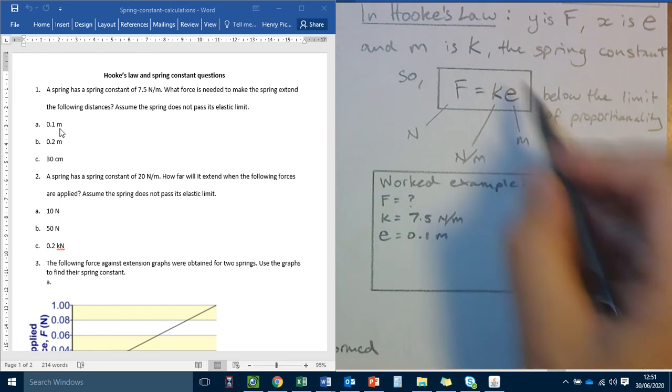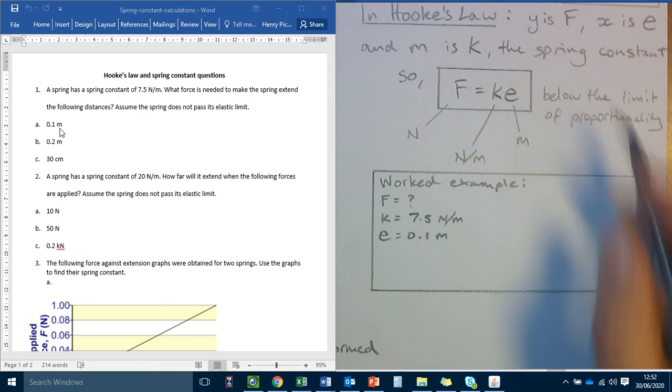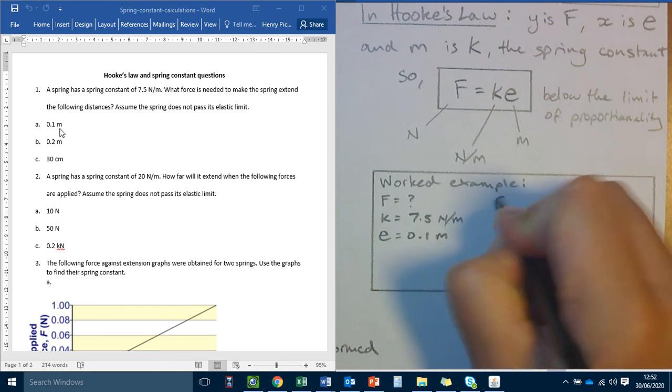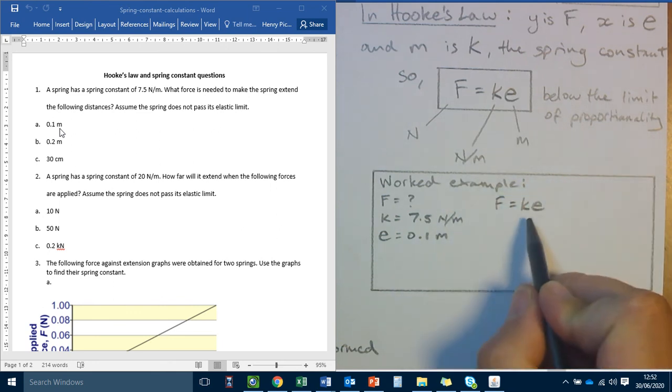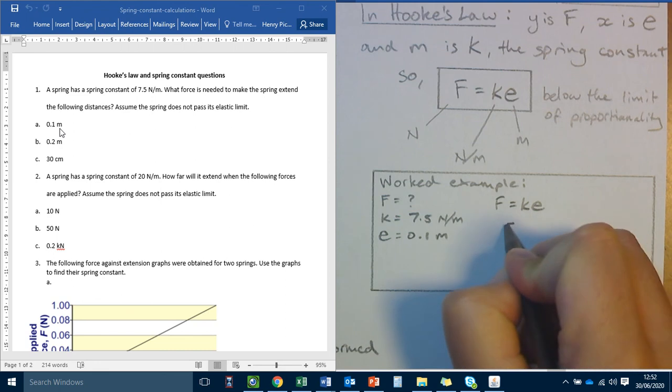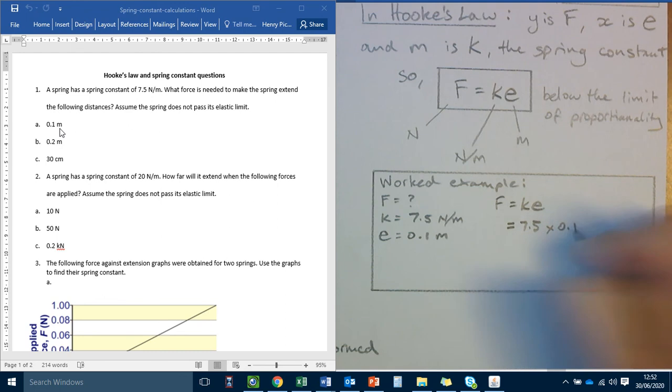I don't know F. So I'm going to write down the equation that I need to find F. And it's already in this natural form. So I'm going to write F equals KE. I'm then going to substitute the value for the variable. So K equals 7.5, K here is 7.5, and that's times E, which is 0.1. So I write 0.1.